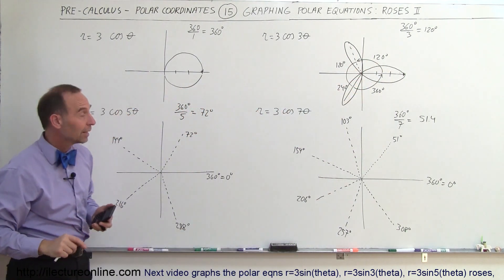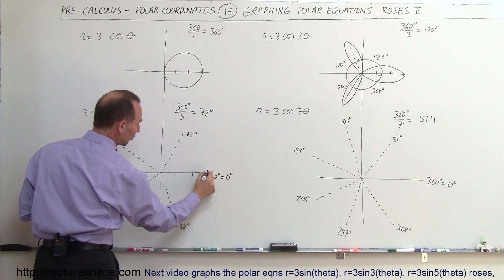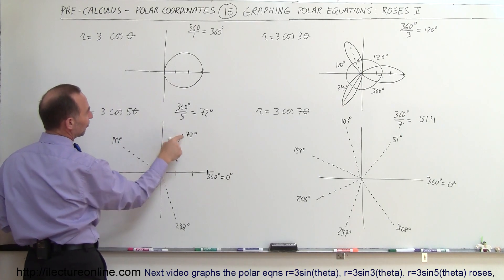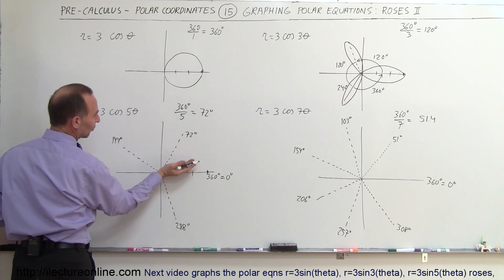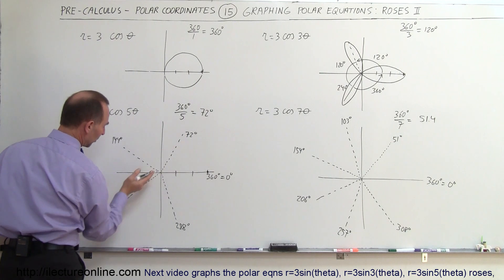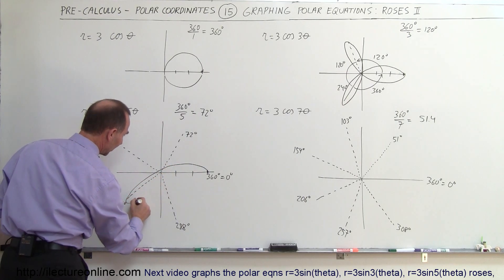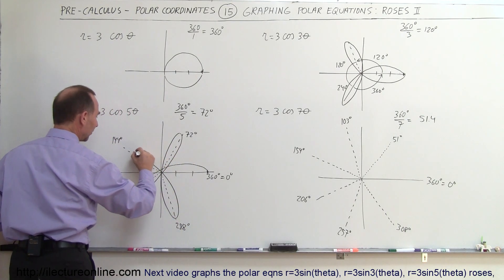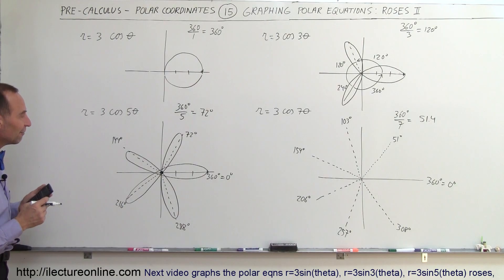Coming over here, we're going to have a 5-leaf one. Starting over here — when the angle is 0 degrees, R equals 3. When the angle becomes equal to half of 72 degrees — about 36 degrees — 5 times 36 is 180. So when we get to 36 degrees, that gives 180, and the cosine of 180 is minus 1. So when pointing in this direction, minus 1 puts us right over here on this leaf. That's why when we graph it, it'll come like this, then go to this leaf, to this leaf, around to this leaf, and finish up — giving you the 5-leaf rose.